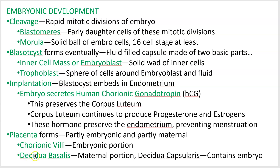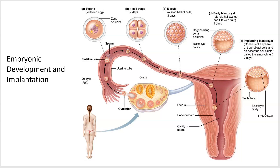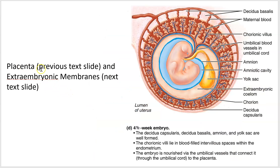The maternal portion of the placenta is called the decidua basalis and the decidua capsularis. The decidua basalis is the part directly interfacing with the embryo — aimed at the embryo's umbilical cord. The decidua capsularis forms the bubble around the outside of the entire embryo and its amniotic fluid sac.